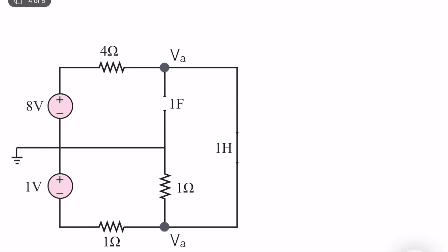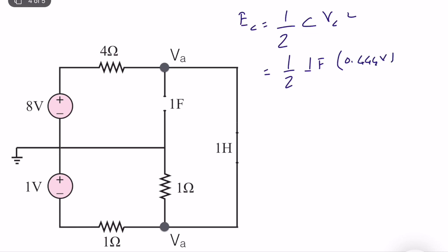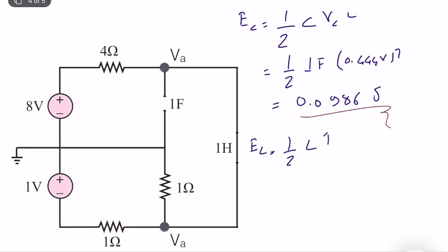Now it is straightforward to compute the stored energies. The capacitor energy EC equals (1/2) × C × VC². With C = 1 farad and VC = 0.444 volts, EC equals (1/2) × 1 × (0.444)² = 0.06 joules. The inductor energy EL equals (1/2) × L × IL². With L = 1 Henry and IL = 1.89 amps, EL equals (1/2) × 1 × (1.89)² = 1.786 joules.